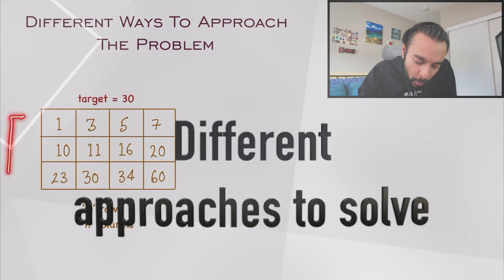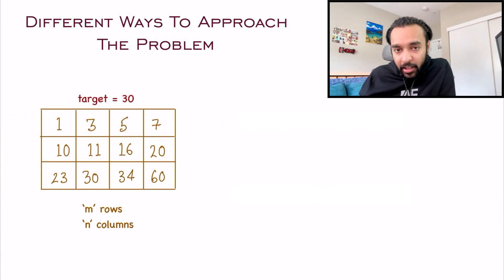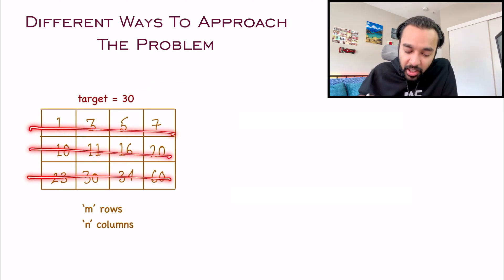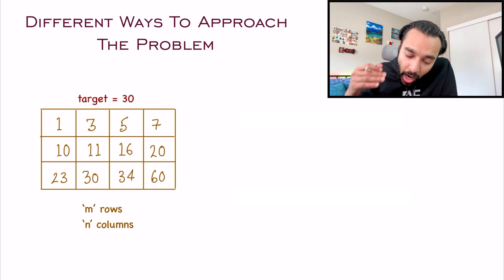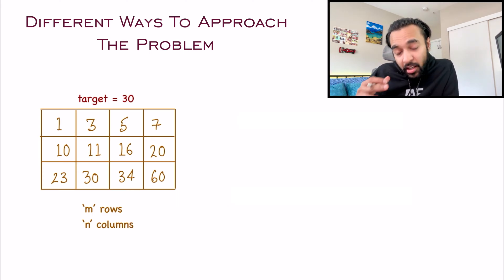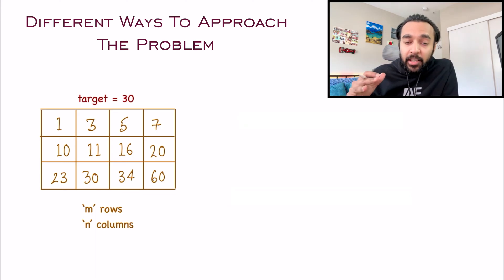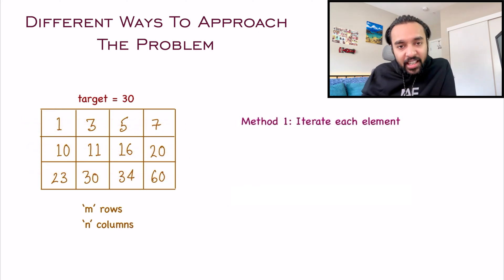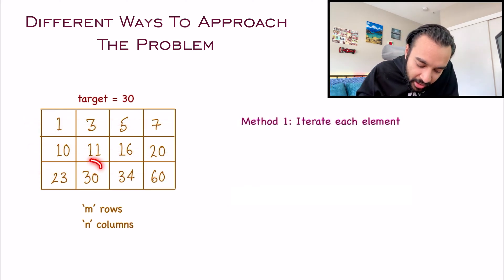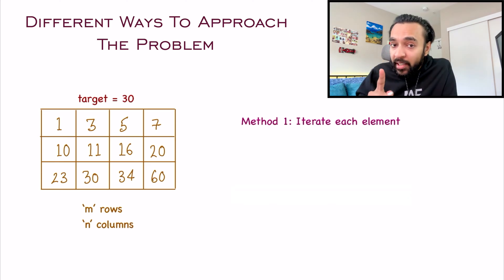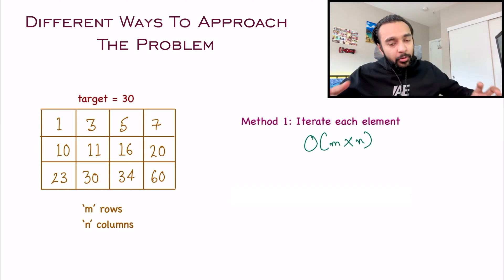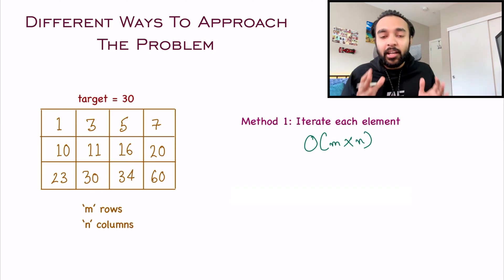I have a sample 2D array with m rows and n columns, and you are given a target value of 30. You can see that all of my elements are sorted in a row-wise fashion. As a developer, you will first try to come up with a brute force approach. The most naive way is to iterate through each element of the array and find if you can find a 30. You can see a 30 over here and return true. But this solution will have a worst case time complexity of O(m cross n) because you may have to iterate through the entire array, and that will end up taking a lot of time.